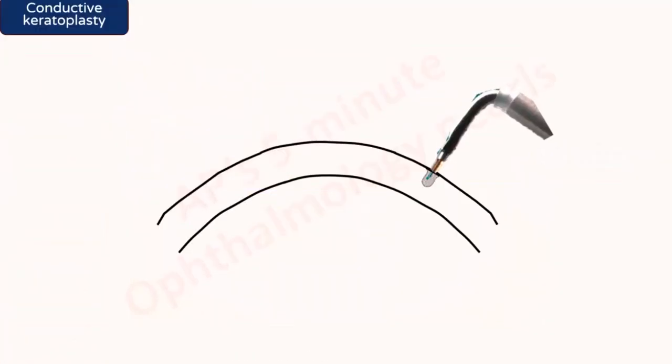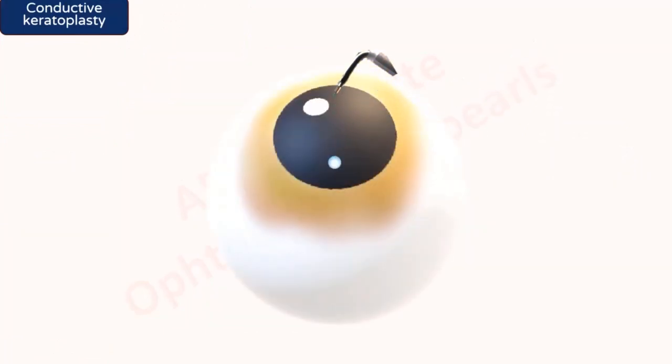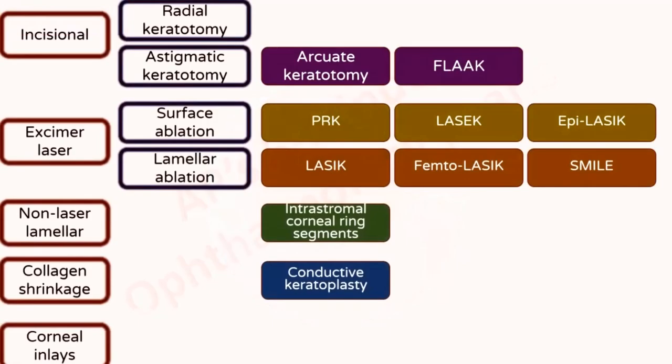In conductive keratoplasty, heat is applied to the periphery of the cornea by means of radio frequency waves. The subsequent collagen shrinkage results in central steepening, so this procedure is useful for hypermetropia and cannot be used in myopia. Performing it in the non-dominant eye in an emmetropic presbyope is one of the ways of correcting presbyopia by monovision. Conductive keratoplasty, however, is not much used nowadays.